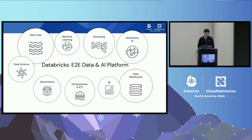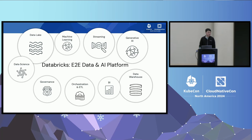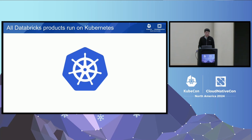A quick introduction of what Databricks is. We are an end-to-end data and AI platform. We help customers understand their data. We run all of these workloads on our platform for our customers. These include machine learning, streaming, generative AI, data warehouse, ETL, and many other things. All Databricks products run on Kubernetes. We have a really large footprint — it's a multi-billion dollar business that's totally run on Kubernetes.